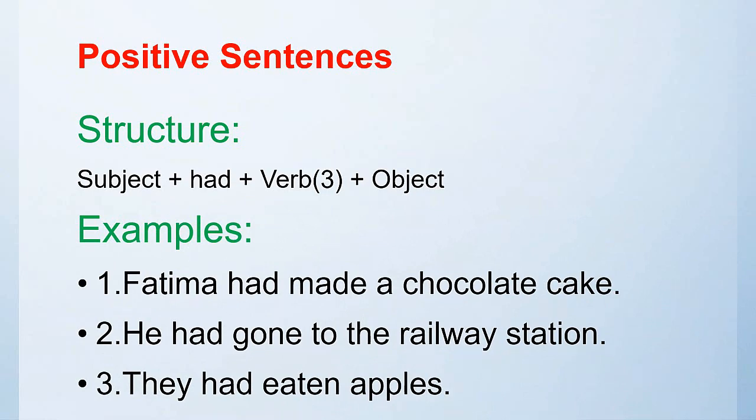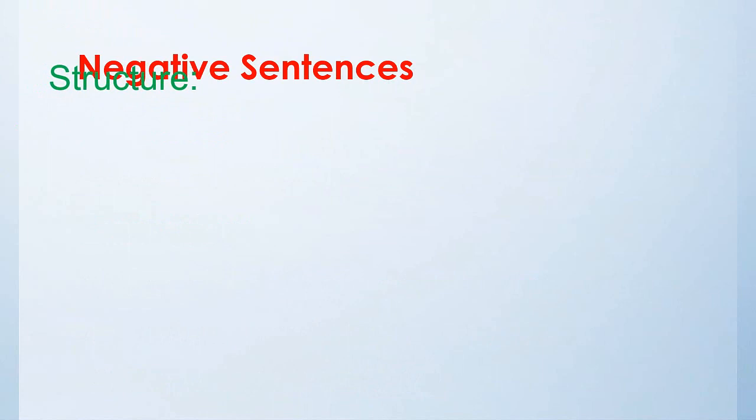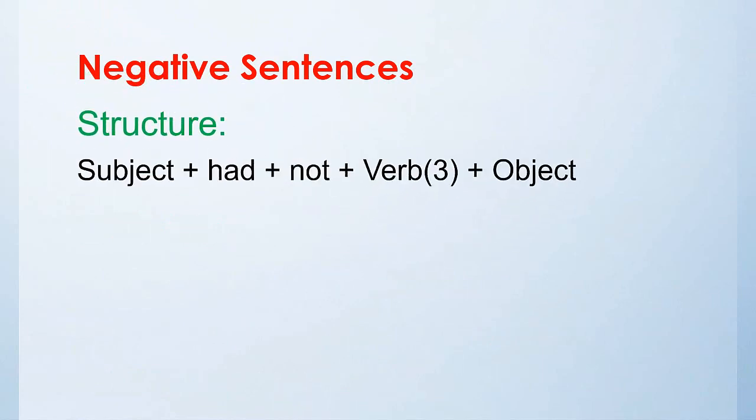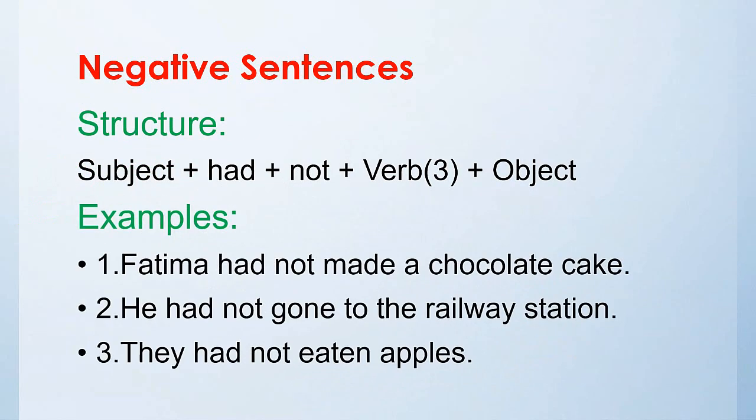Now let's look at the negative sentences. The structure is: subject plus had plus not plus verb third form plus object. Now let's look at the examples. Fatima had not made a chocolate cake. He had not gone to the railway station. They had not eaten apples.